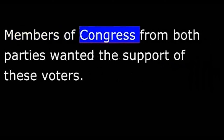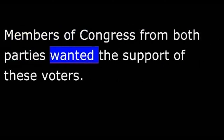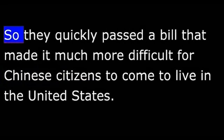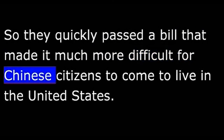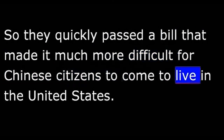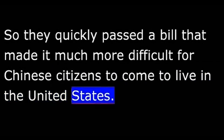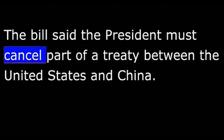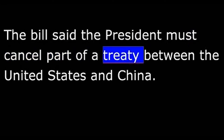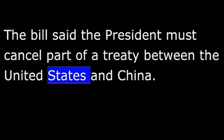Members of Congress from both parties wanted the support of these voters. So, they quickly passed a bill that made it much more difficult for Chinese citizens to come to live in the United States. The bill said the President must cancel part of a treaty between the United States and China.